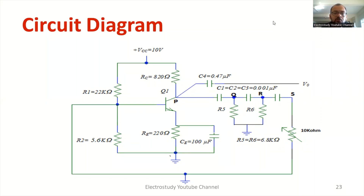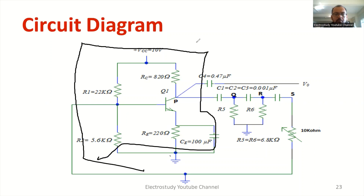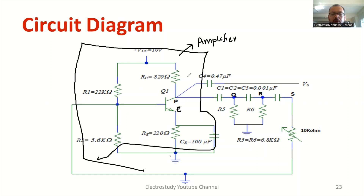As you can observe the circuit diagram of RC phase shift oscillator, there are two major components. The first segment — you can call it the amplifier part. It is a common emitter (CE) amplifier. The transistor acts as an amplifier.